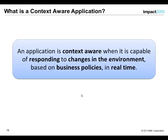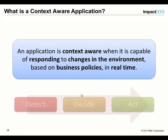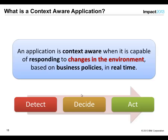That's a lot of words, so we can boil it down to three simple words: detect, decide, and act. When we talk about detecting, we're detecting changes in the environment — what's happening around us that we can take advantage of. Deciding is based on our business policies — what our organization says is the way we should respond. And then we actually have to respond, and that's where act comes in.